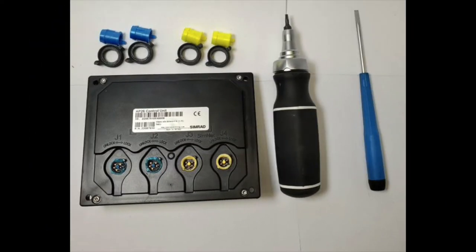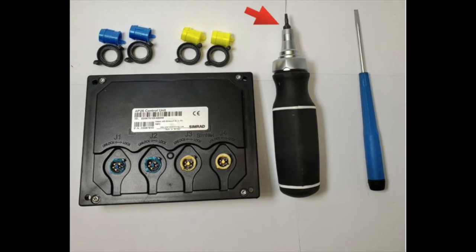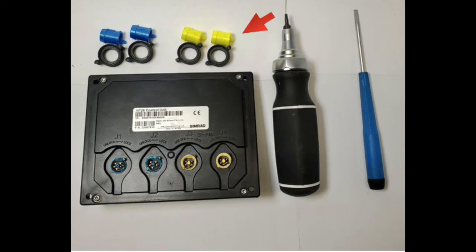In order to do this you will need your Simrad unit, small flathead screwdriver, a small Phillips head screwdriver, and a package of new bushings which can be purchased at maxmarineelectronics.com.